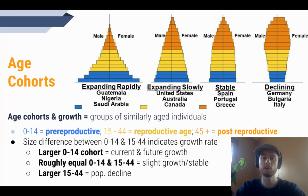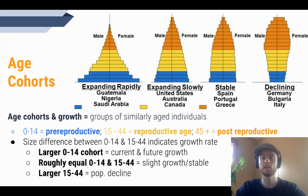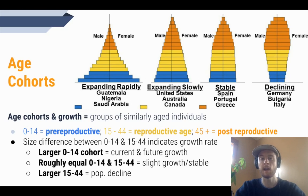If the pre-reproductive and reproductive age cohorts are roughly the same size, it indicates slight growth or a stable population that's neither growing nor declining. This means the reproductive age group is having only about the number of children needed to replace them, so the population should remain stable. If the reproductive age population is larger than the pre-reproductive age population, that means they are having fewer children than needed to replace them, and the population is in decline. This is typical of highly affluent or wealthy countries like Germany and Italy.